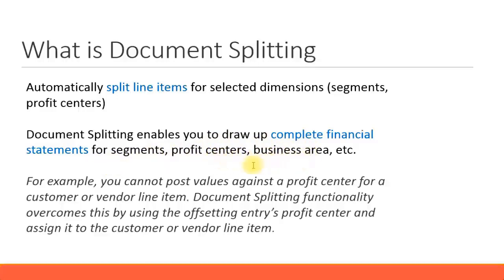Document splitting is most commonly used for profit centers and segments. For example, if you have different branches in different locations and you want to know the profitability — and want a balance sheet and P&L statement for each branch — you can achieve the P&L statement, but to have the balance sheet with all accounts receivable and accounts payable fields filled up, you need to enable document splitting. Document splitting ensures that all customers and vendors are filled with the relevant profit center, not only the company code, giving you a complete balance sheet.